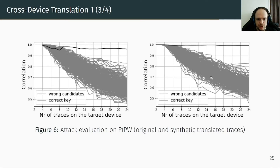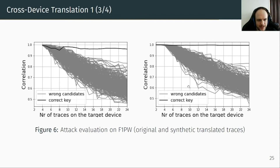This graph shows the attack evaluation on F1 power with CPA. On the left is the CPA performance on the original dataset; on the right, on translated traces. The x-axis is the number of traces; the y-axis is the correlation. We observe that the performance of CPA is improved with trace translation: on the synthetic translated traces, CPA found the correct key with only 2 traces, whereas on the original traces CPA does not succeed.